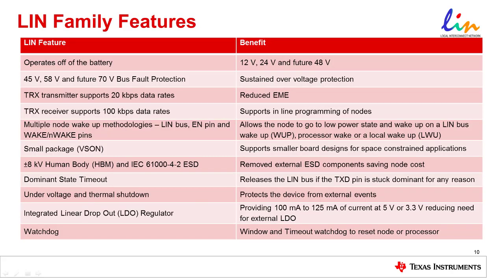Texas Instruments' LIN devices feature many benefits for customers. They operate off 12 and 24-volt battery systems, providing 45 and 58-volt bus fault protection, transceiver transmitter supporting up to 20 kilobits per second, transceiver receiver supporting 100 kilobits per second data rates to support in-line programming of LIN nodes, multiple node wake-up methodologies, small package options, 8KV HBM and IEC 6100-4-2 ESD, dominant state timeout support, under-voltage and thermal shutdown, integrated LDOs, as well as watchdogs.